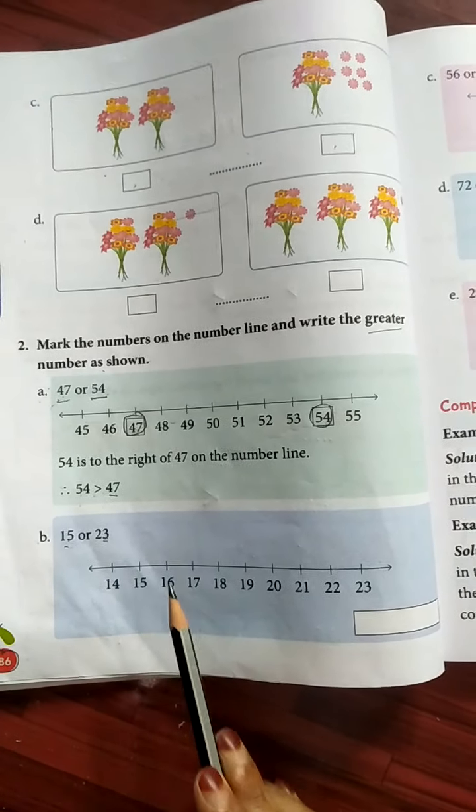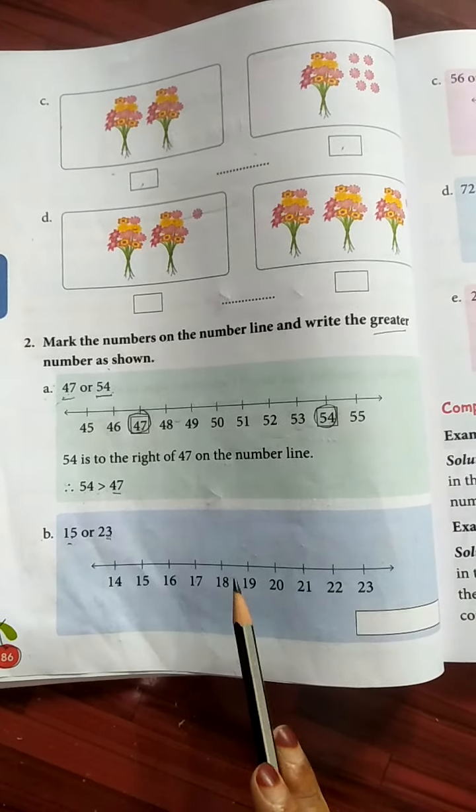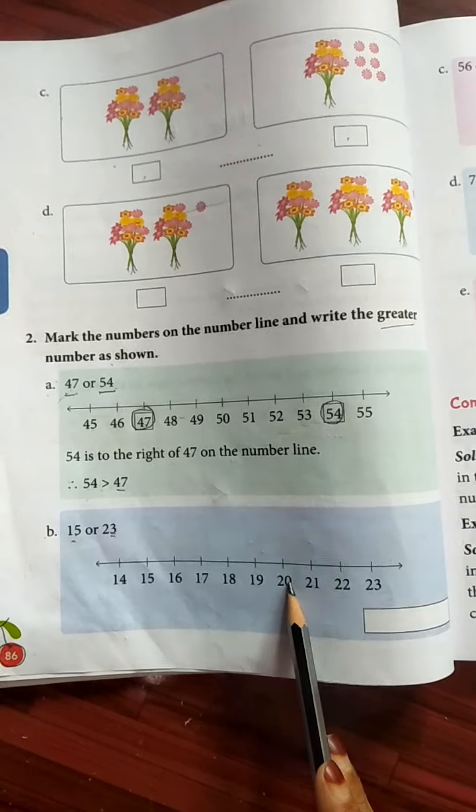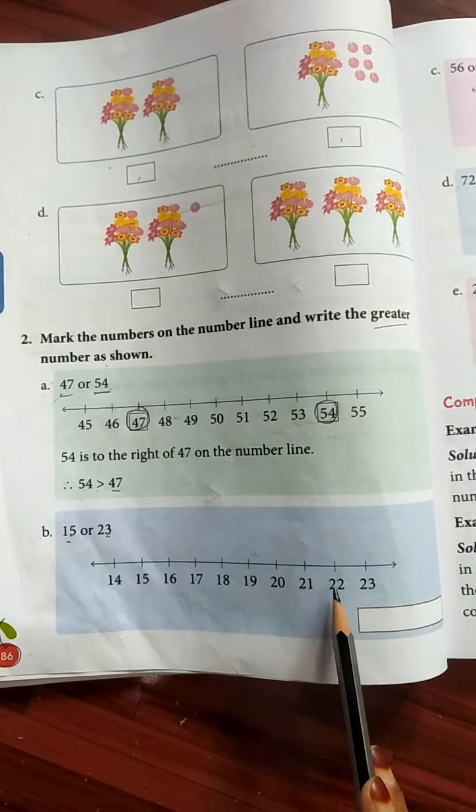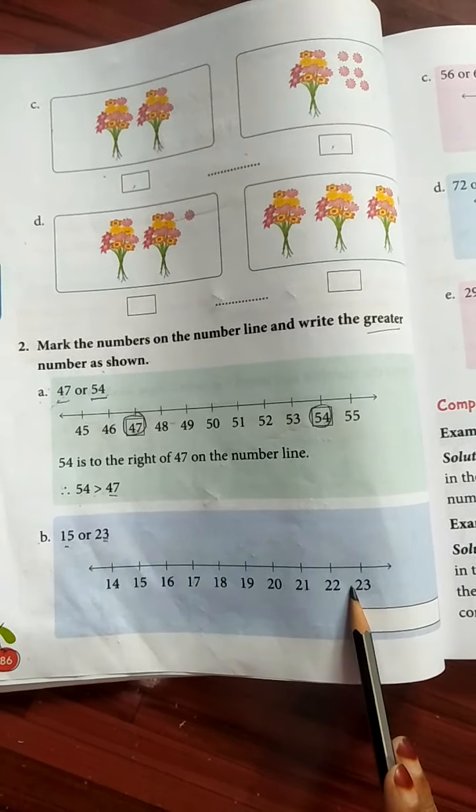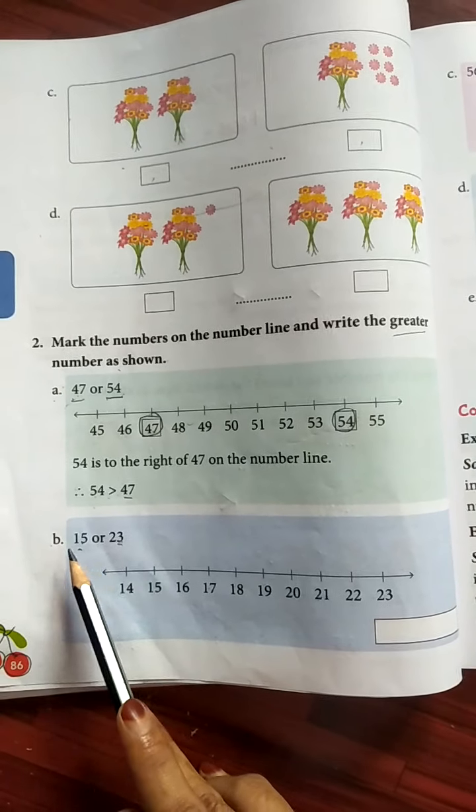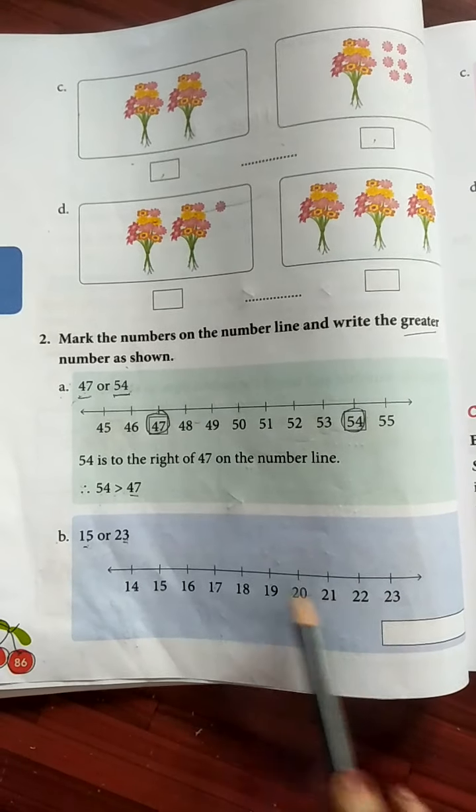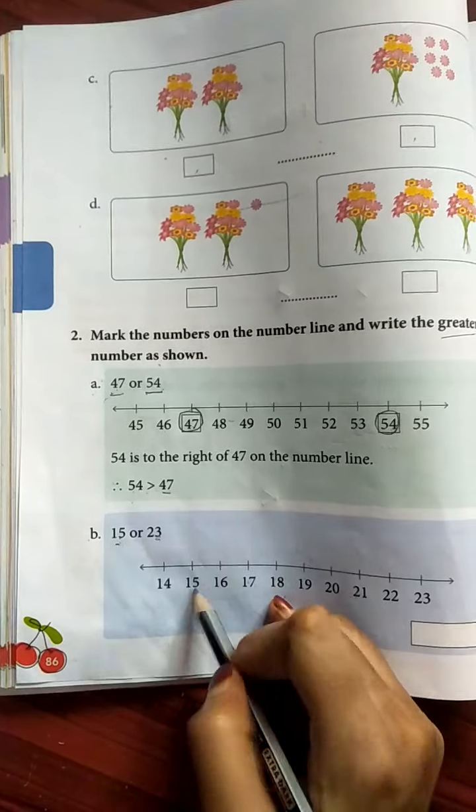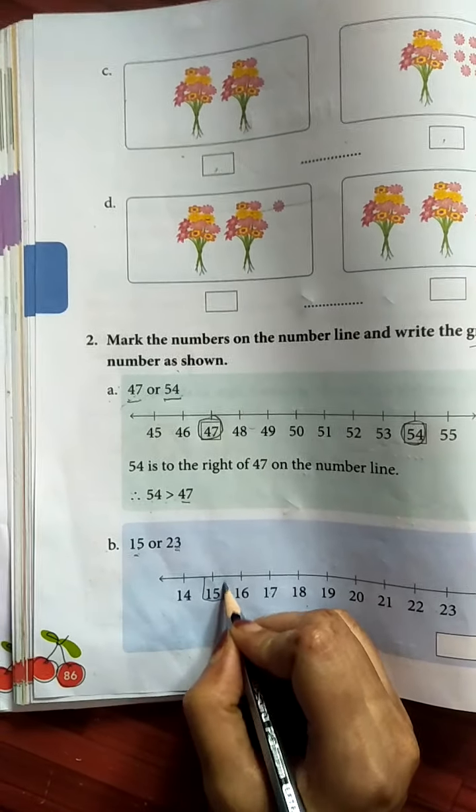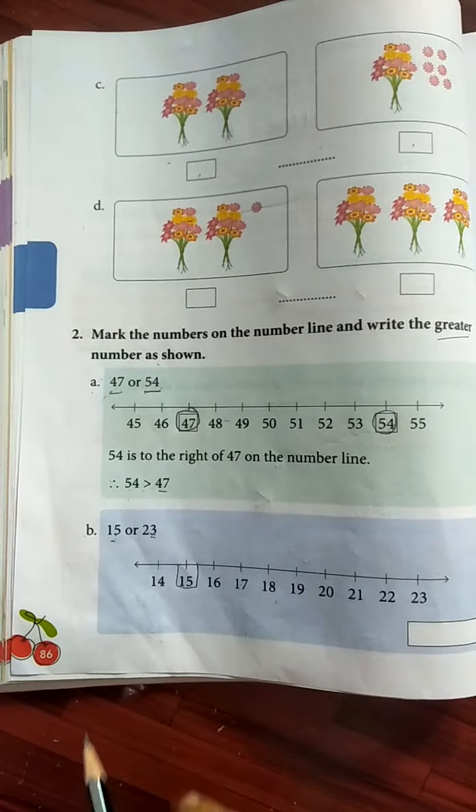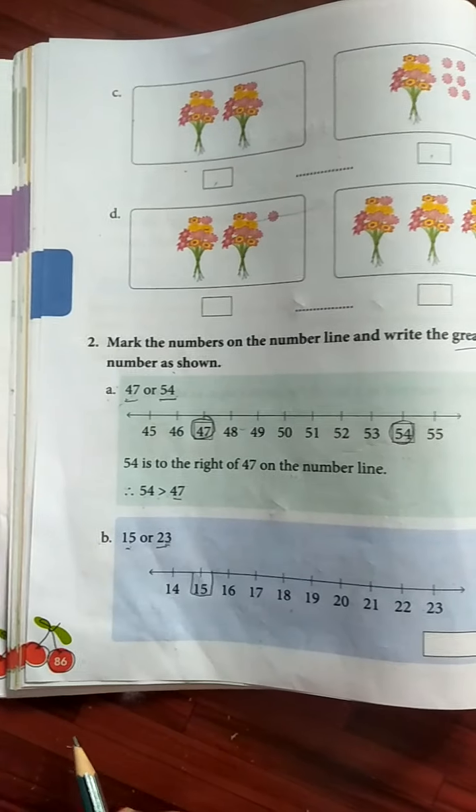First, what are the numbers here? 14, 15, 16, 17, 18, 19, 20, 21, 22 and 23. So where is 15 in this number line? Here. Here 15. Now next, where is 23?